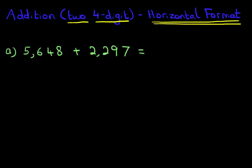Okay, that's our question: 5,648 plus 2,297. Now, we've done this previously, but with smaller numbers. We're going to use the same principles. Start on the left-hand side. We've got thousands and thousands. Let's join the arrows. We're doing 5 plus 2. 5 plus 2 is 7.